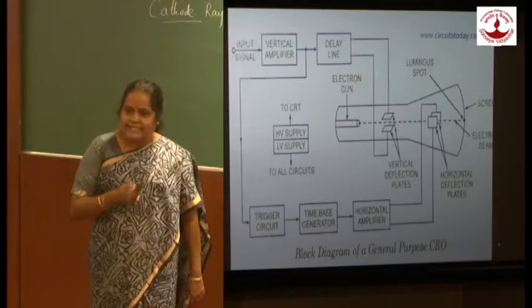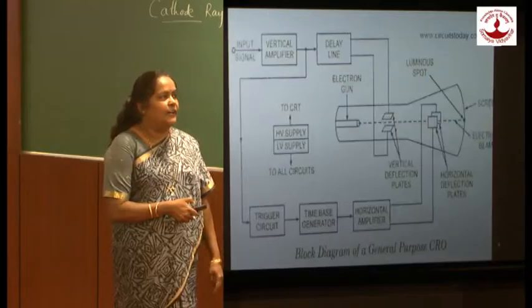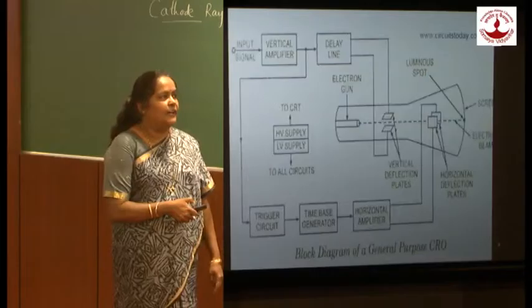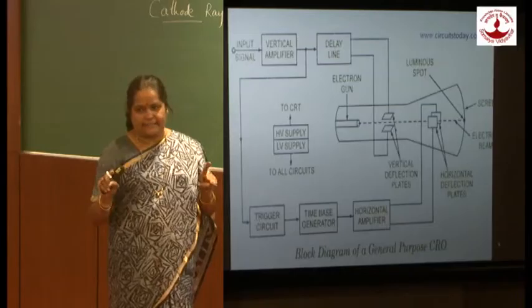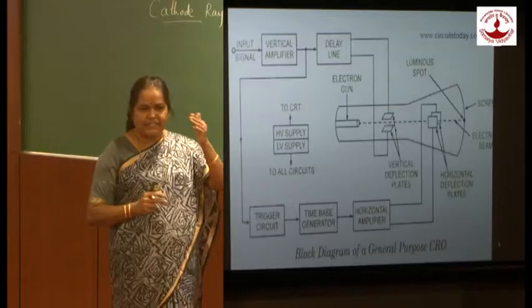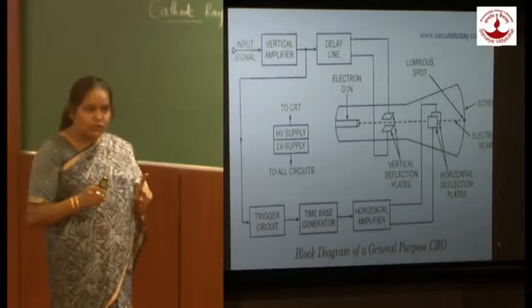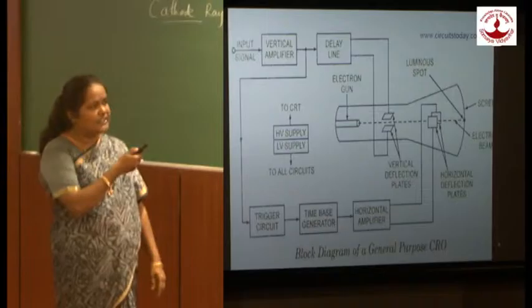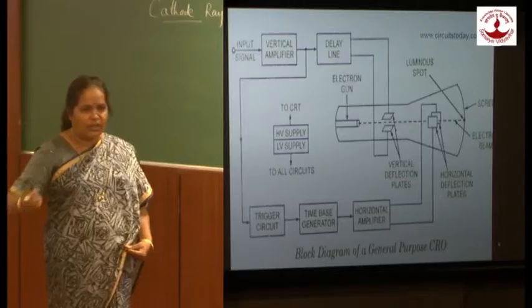The CRT produces a sharp focused beam of high velocity electrons. Before reaching the CRO screen, these electrons pass through two deflecting plate systems — the vertical deflecting plate system and the horizontal deflecting plate system. For the vertical deflecting plates, if the voltage on both plates is zero, the CRO beam will be exactly at the center. If the voltage on one plate is larger, the beam will move in the upward or downward direction, depending on the voltage applied. Similarly for the horizontal deflecting plates, when the voltage on both plates is the same, the beam is at the center. Depending upon the voltage difference on the horizontal plates, the beam will move either to the extreme right or extreme left.